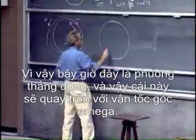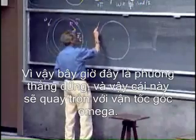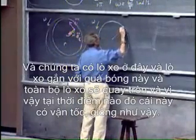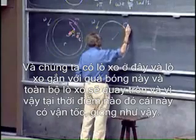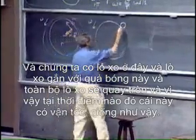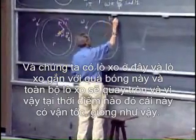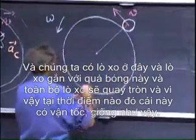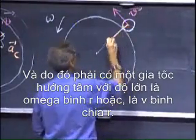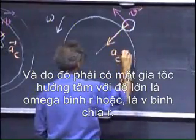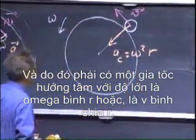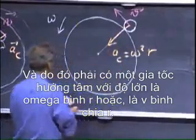This is vertical, and so the disk is going to go around with angular velocity omega. We have a string here attached to this ball, and the whole thing is going around. So at one moment in time, this has a velocity, and therefore there must be non-negotiable centripetal acceleration, which in magnitude is omega squared r, or, if you want, v squared divided by r.